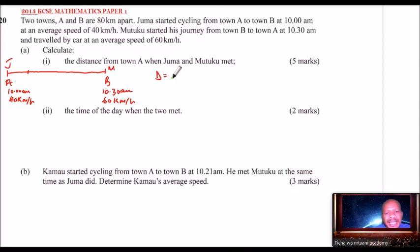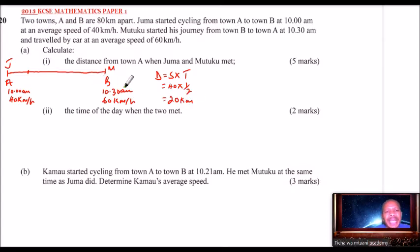Distance equals speed multiplied by time. The speed of Juma was 40 kilometers per hour, and the time is half an hour, which gives 20 kilometers. So by the time Mutuku was starting the journey, Juma had already covered 20 kilometers. The distance from A to B is 80 kilometers, so we have 60 kilometers remaining.